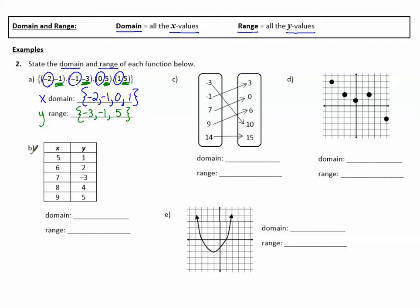In example B, the domain is the x values, so I list all of them: 5, 6, 7, 8, and 9 — that is the domain. The range is the y values, and I'll list them in order from least to greatest: negative 3, 1, 2, 4, and 5.